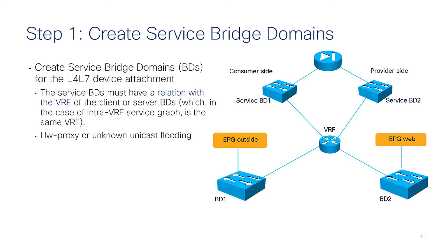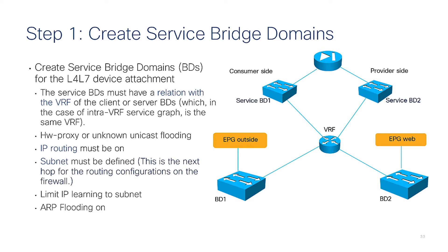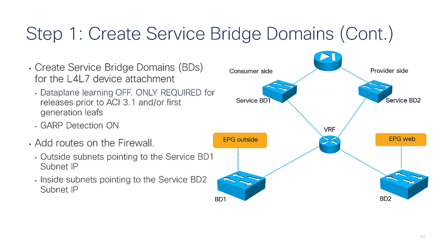The BD can be configured for hardware proxy or non-unicast flooding, and IP routing must be on. A subnet must be defined — this is where the routes of the firewall point to. The route towards the outside for the firewall points to the subnet on this bridge domain, and the route to web servers from the firewall points to the service BD number 2 IP. You do not need to turn off data plane learning, although this was required for releases prior to 3.1 and is still required if you're using first-generation leaves.